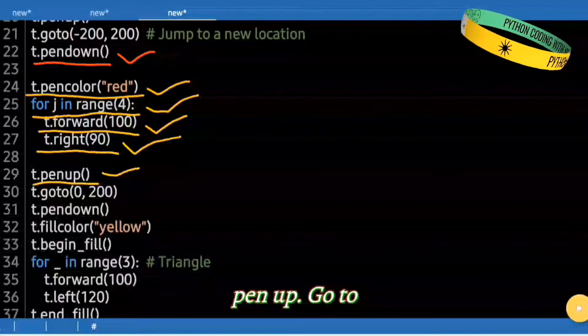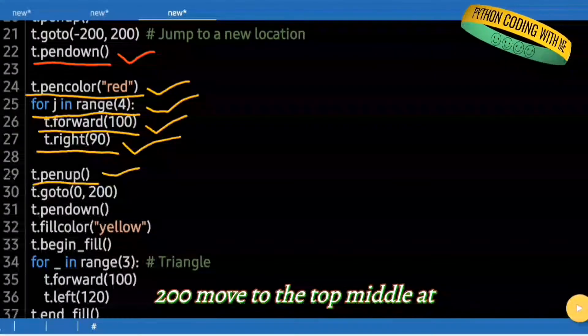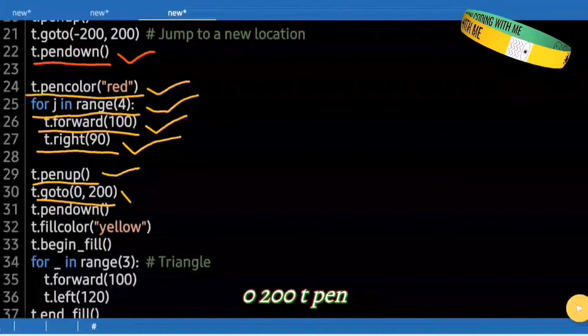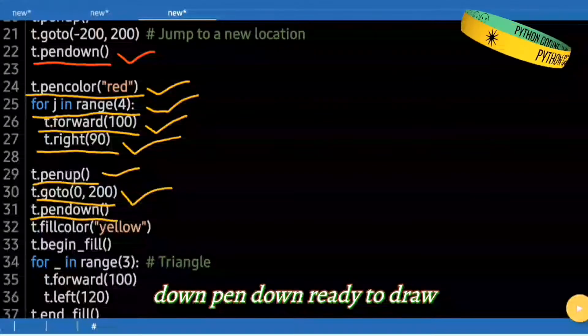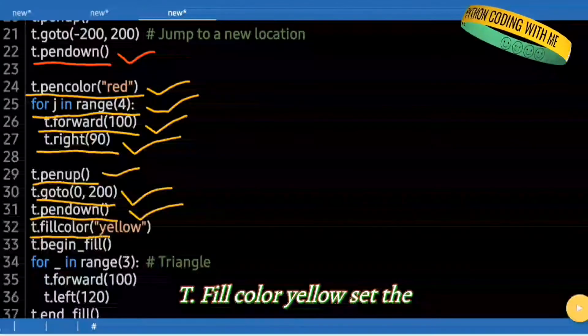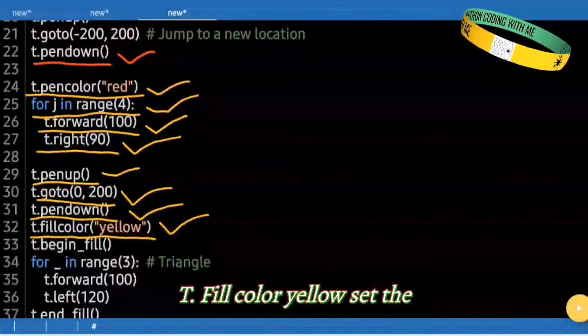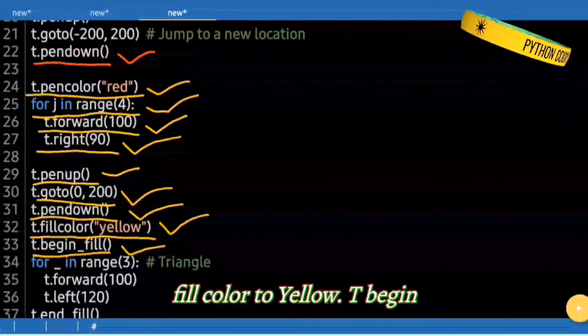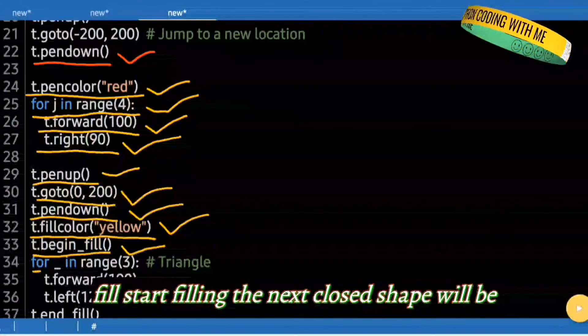t.penup(). t.goto(0, 200). Move to the top middle at 0, 200. t.pendown(). Ready to draw. t.fillcolor("yellow"). Set the fill color to yellow. t.begin_fill(). Start filling, the next closed shape will be filled.